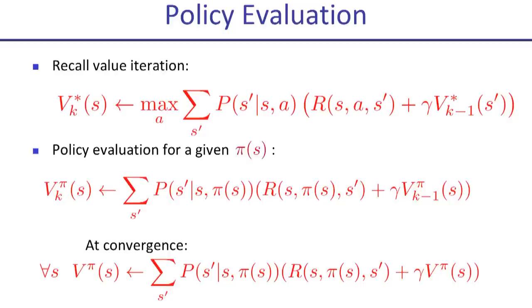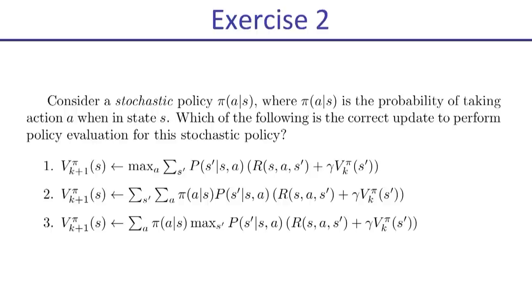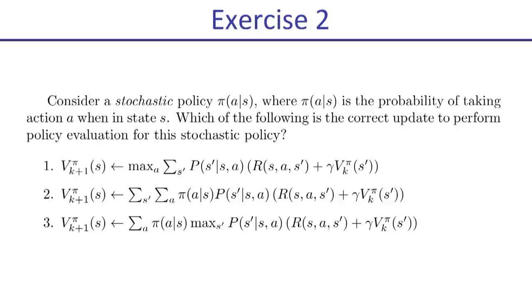For a stochastic policy where pi of A given S is the probability of action A in state S, the policy evaluation equation becomes: V pi_{K+1} of S equals sum over actions A of pi(A|S), times sum over S prime of the transition probability times the reward plus gamma times V pi_K of S prime. The max is replaced by a sum over actions weighted by the policy's action probabilities.